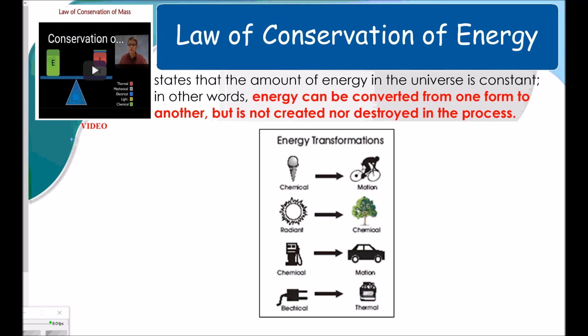So energy transformations. Here are some examples. I've got chemical energy from food going into kinetic energy of motion. A person eating an ice cream and then riding a bicycle. We've got radiant energy turning into chemical energy. Radiant energy being from the sun helping a plant grow. Chemical energy turning into kinetic energy of motion. So gasoline going into a car. And electrical energy turning into thermal energy would be plugging in your stove.